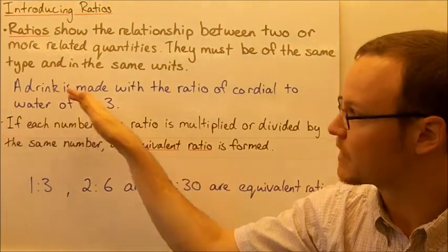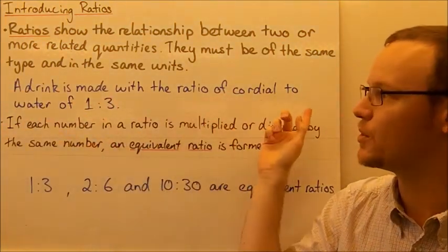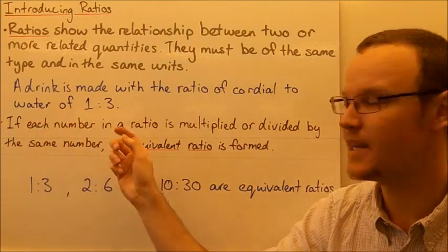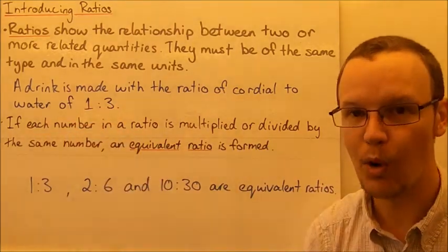For an example, if we've got a drink and it's made up with the ratio of cordial to water of 1:3, that means for every one part of cordial, there are three parts of water.